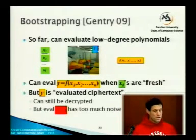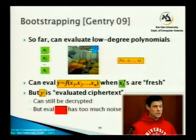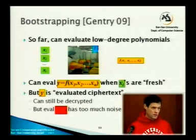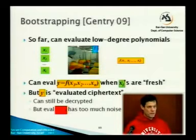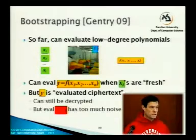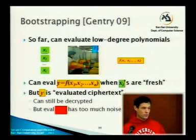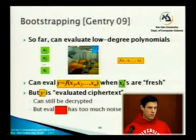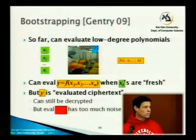To construct this apparatus we need a description of the function — an arithmetic circuit of polynomial size that computes a low-degree polynomial. We can evaluate it on freshly encrypted ciphertexts x1 through xt. The output y is no longer in a green box; it's in an orange box because its noise level is too high.